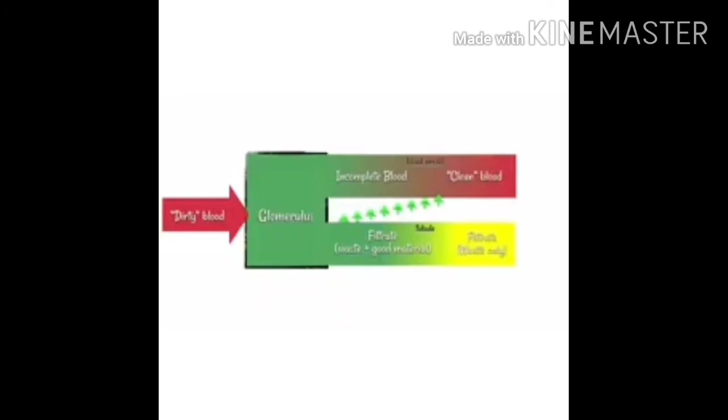The blood is separated from the filtrate but is incomplete at this stage, since useful materials like glucose and amino acids are absent. Through selective reabsorption, useful materials are transferred back into the blood. We now have clean blood with all useful things, leaving behind in the tubule only waste — urea, excess salts, and excess water.